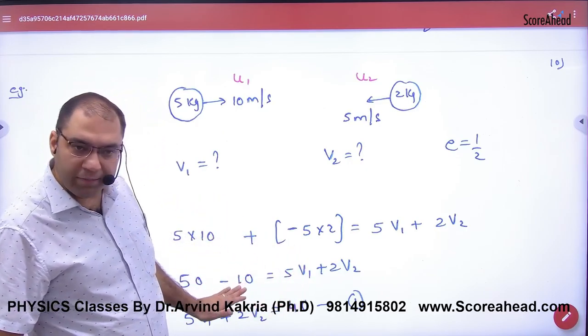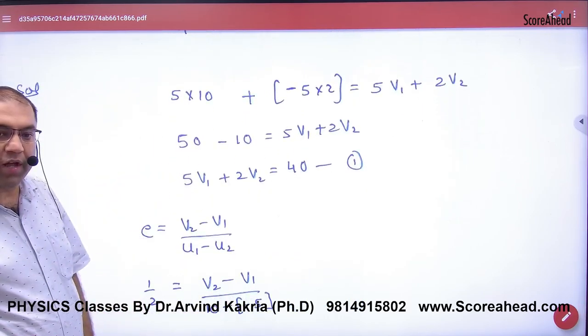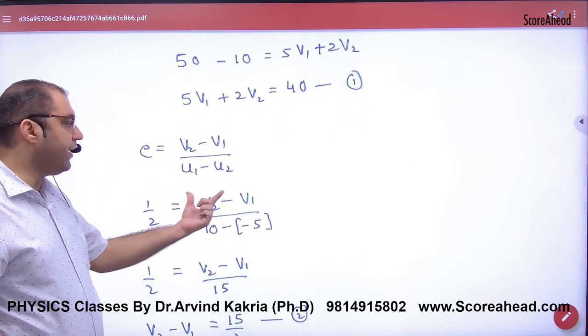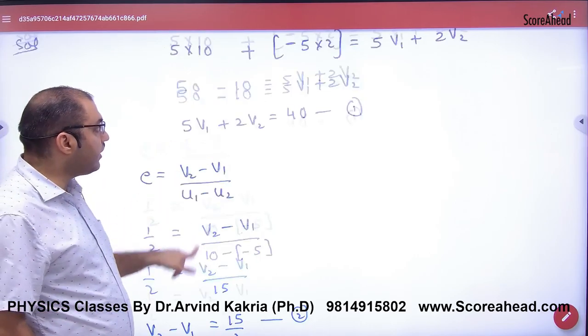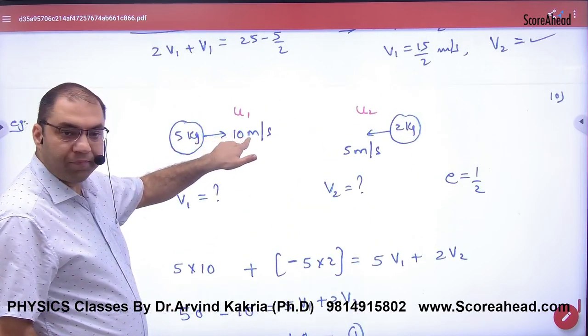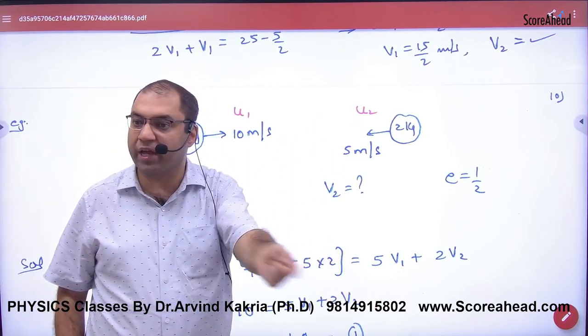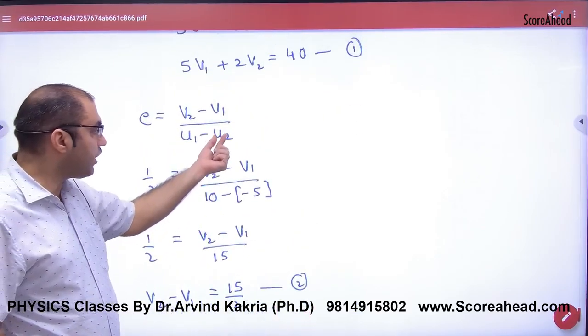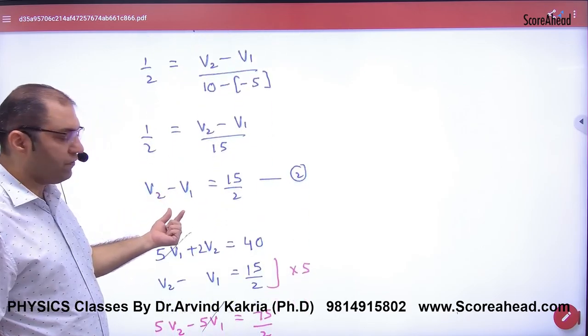Equation number one. Now equation number one has come. Second equation will be made from restitution. Restitution given is half. V2 minus V1 has to be found. In this, we have to put as it is. What is U1 in this? 10. And what is U2? Minus 5. Because it changed direction. So here what will we put? 10. And here what will we put? Minus 5. Solving, what will we get? V2 minus V1.